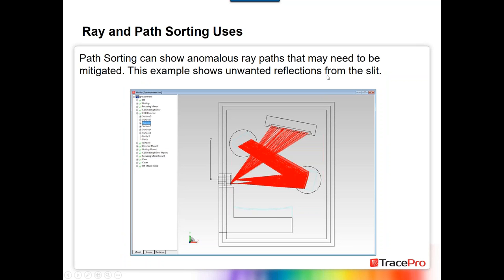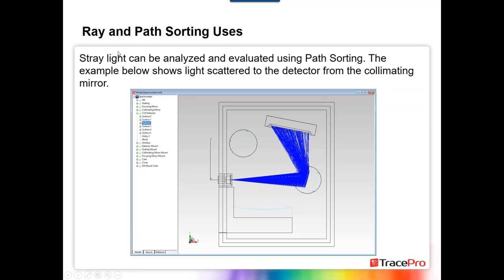You can also use ray sorting to show anomalous ray paths. For example, here are unwanted reflections from the slit — light going back through the system, hitting the edge of the slit, and being seen by the detector. We'd probably want to put a coating on this to mitigate these rays. Here's another example: light scattered to the detector from the collimating mirror. In this case we'd most likely have to improve the mirror coating — polishing it smoother and applying a more specular coating — to reduce this scatter. There's no real way to baffle this, so improving the mirror coating is key.